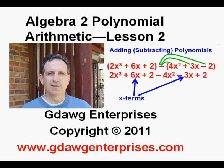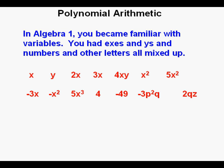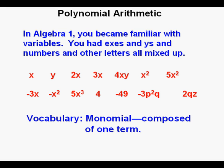Algebra 2 Course Lesson 2: Polynomial Arithmetic. In Algebra 1 you became familiar with variables—you had x's and y's and numbers and other letters all mixed up. Here are some of those variables in different forms as what can be called terms. Each one of these letters and numbers grouped together are called monomials. These are called monomials because they are composed of only one term.